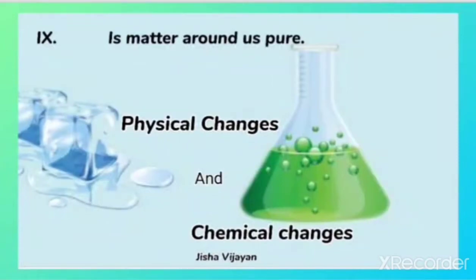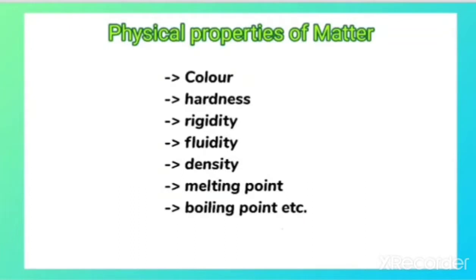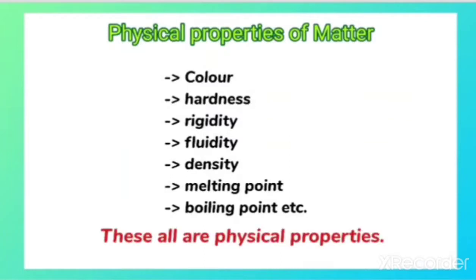Hello students. In this video we are going to discuss about physical and chemical changes. In the previous chapter we have learned about a few physical properties of matter — the properties that can be observed and specified — like color, hardness, rigidity, fluidity, density, melting point, boiling point, etc. These all are physical properties.